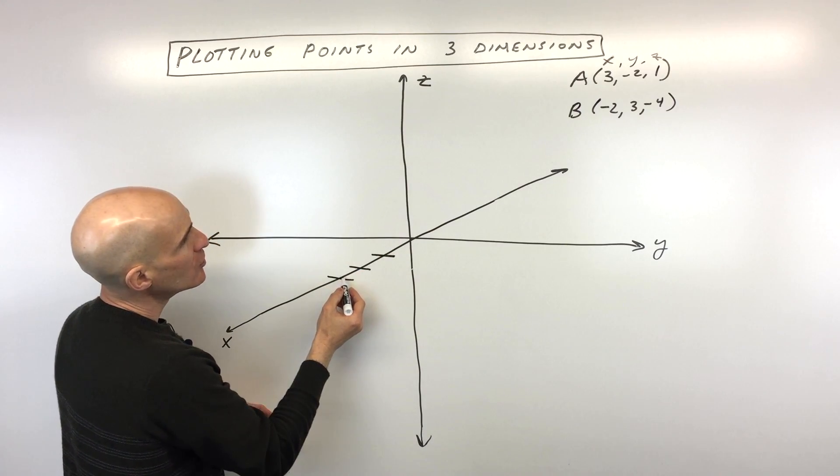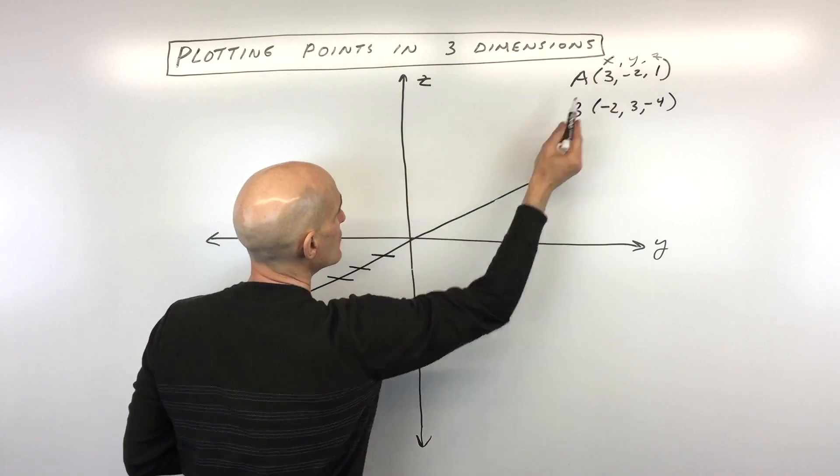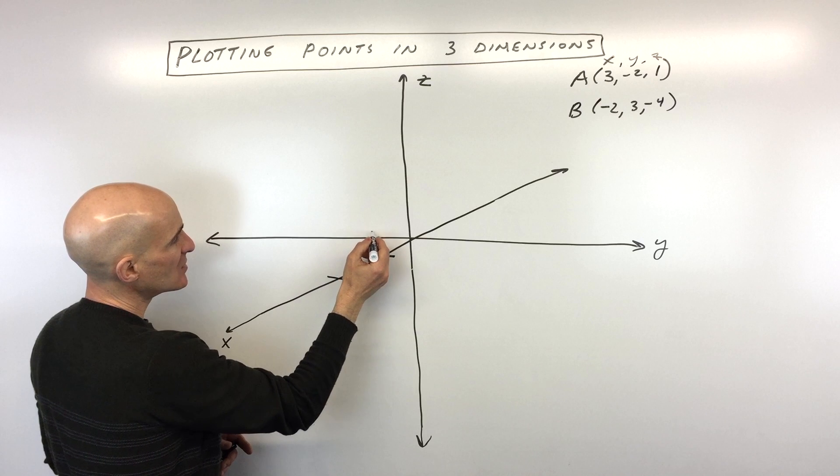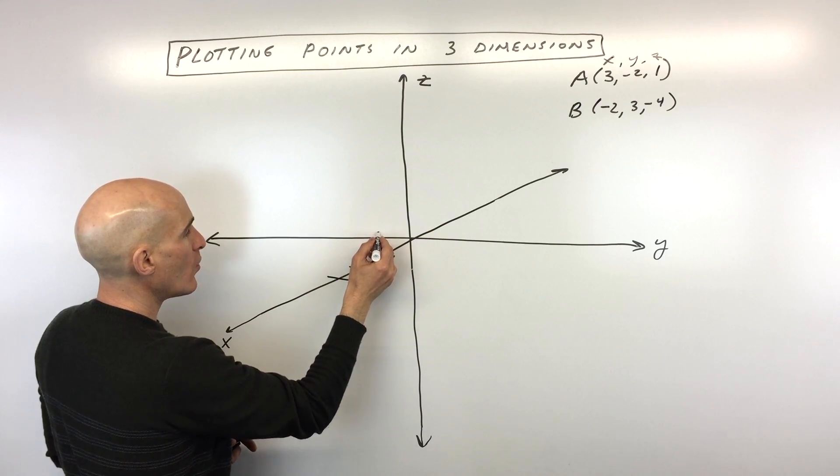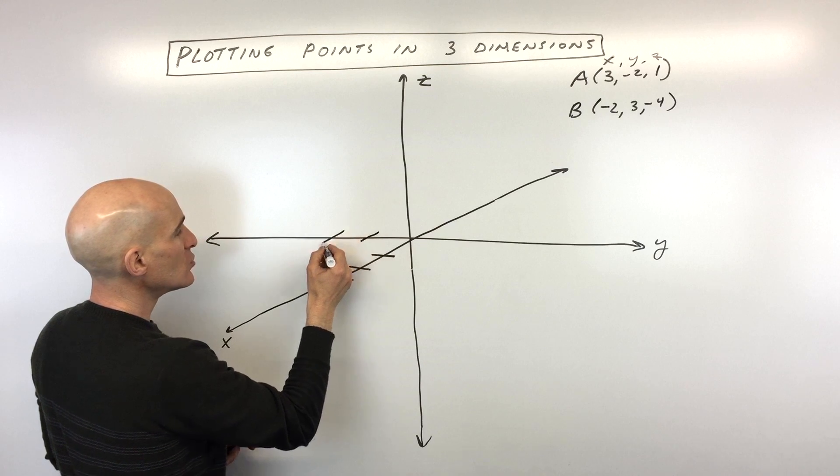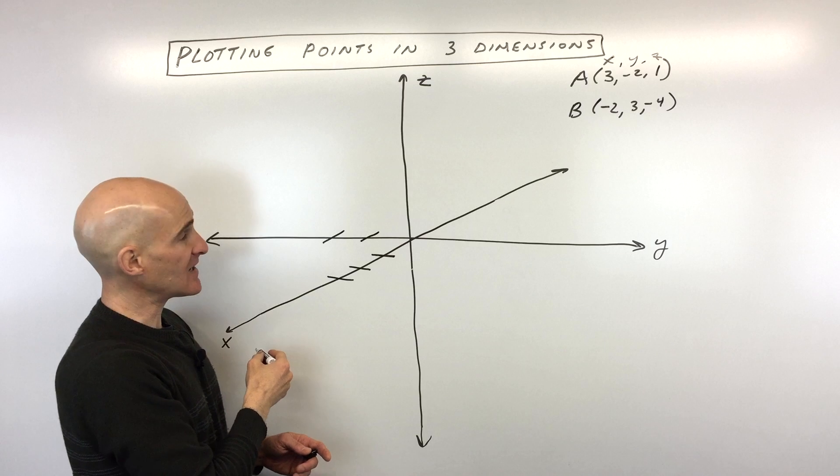And then we're going to go two in the y direction, which is negative two. So I'm going two in the negative y direction. That's going to be like this—let's see, one, two. Now notice how did I draw these lines? I drew them parallel to the x-axis.